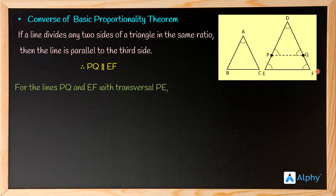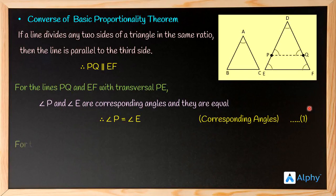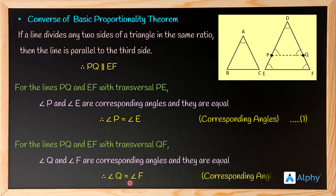Since PQ is parallel to EF and PE is a transversal, angle P and angle E are corresponding angles. Since corresponding angles are equal, angle P equals angle E — this is equation 1. Similarly, with QF as transversal, angle Q and angle F are corresponding angles, so angle Q equals angle F — this is equation 2.